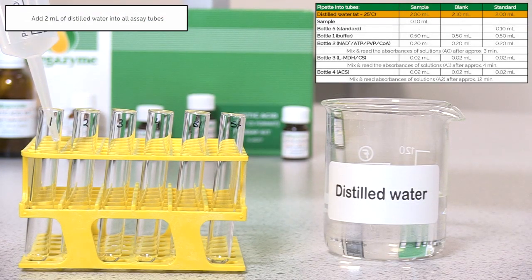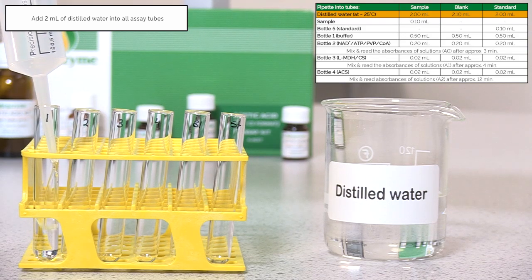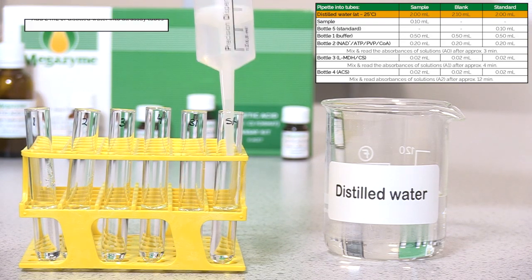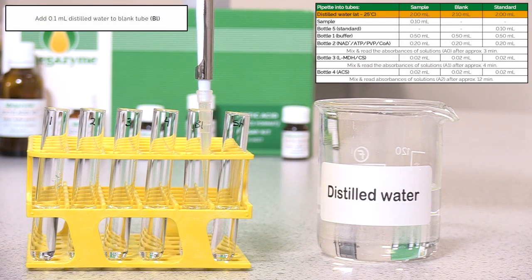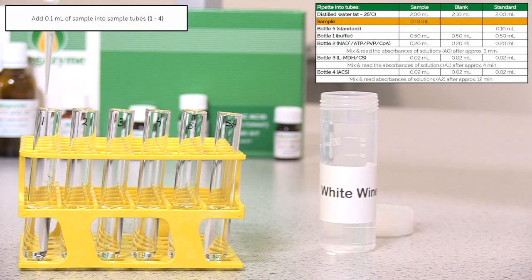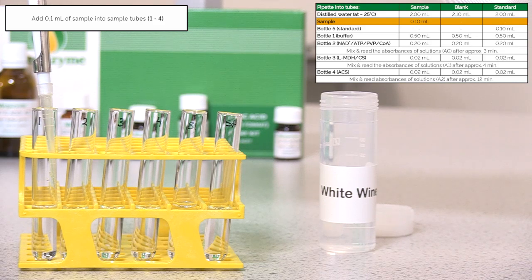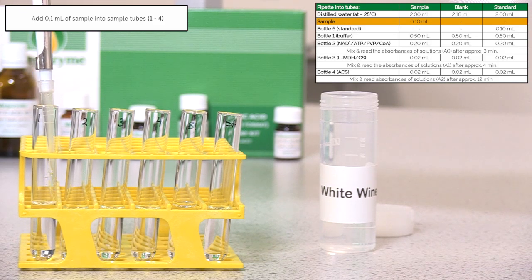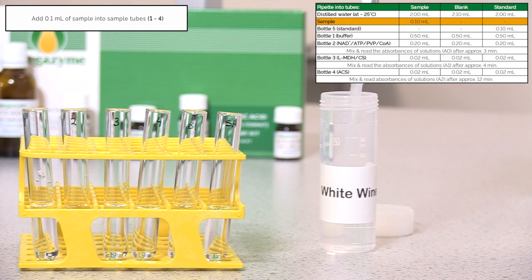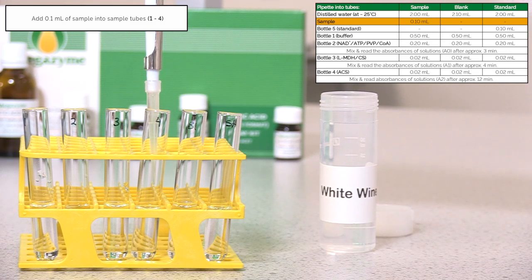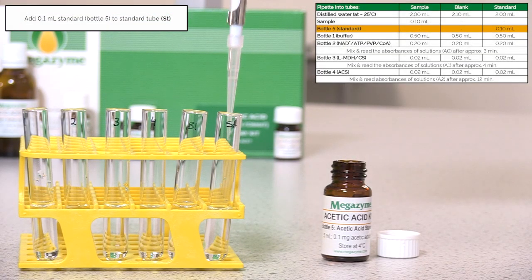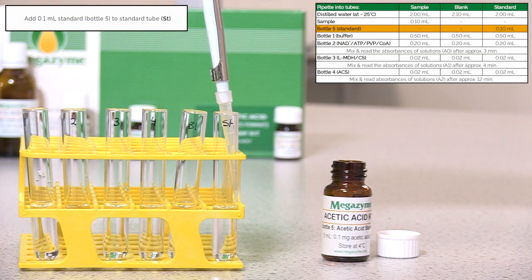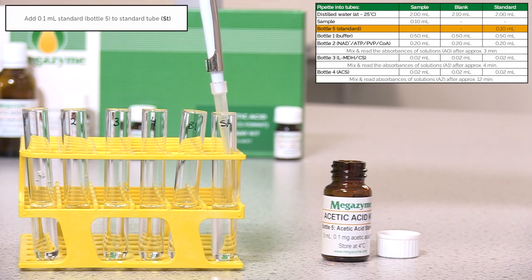Pipette 2 ml of distilled water into all assay tubes. Pipette 0.1 ml of distilled water into blank assay tube. Pipette 0.1 ml of sample into sample assay tubes. Pipette 0.1 ml of kit standard bottle 5 into standard assay tube.